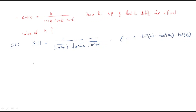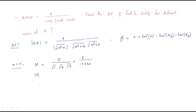First we should find out the magnitude and phase values. At ω = 0, what is the magnitude? Substituting ω = 0: K / [√1 · √4 · √9] = K / (1 × 2 × 3). So the magnitude at ω = 0 is K/6.